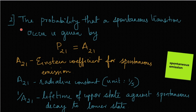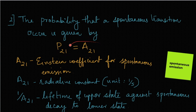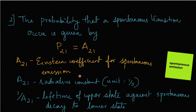The second coefficient concerns spontaneous transitions. The probability that a spontaneous transition occurs is given by P21 = A21. A21 is known as the Einstein coefficient for spontaneous emission, a constant characteristic of the atom, also known as the radiative constant, having the unit 1/second.